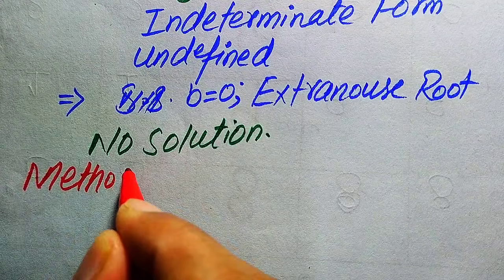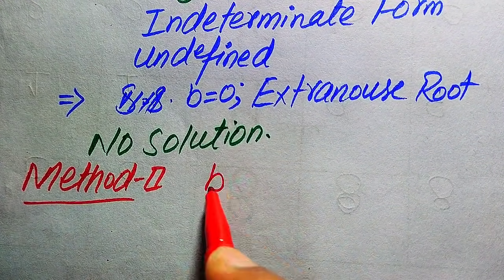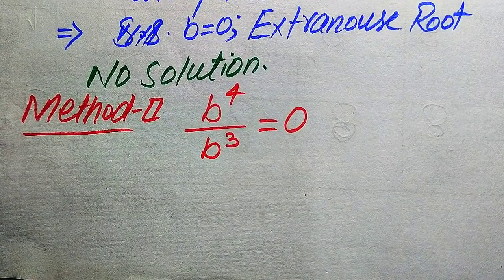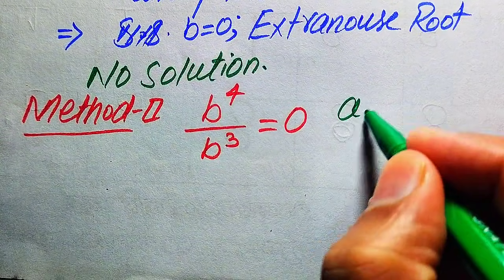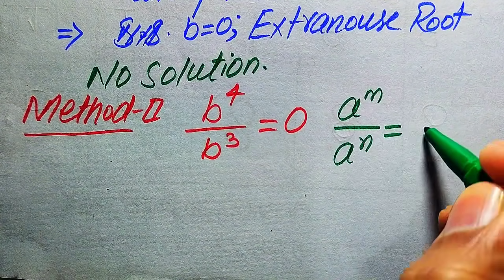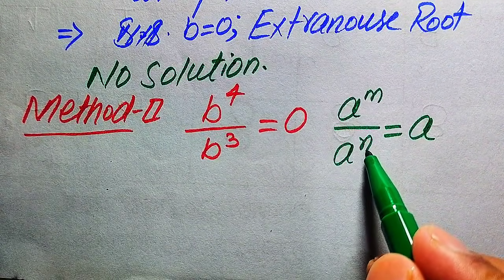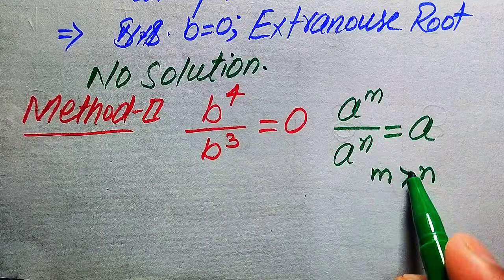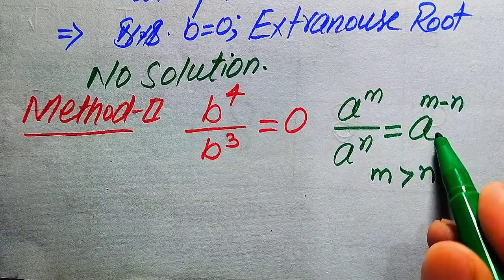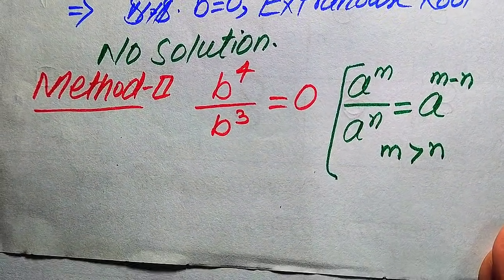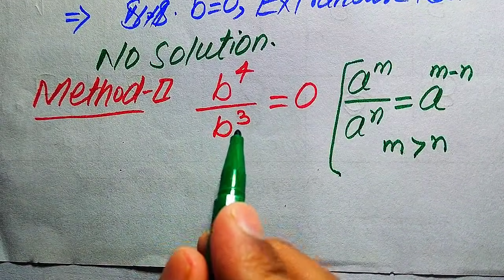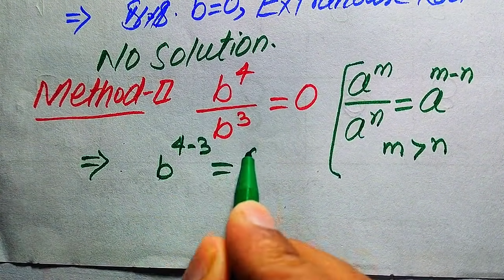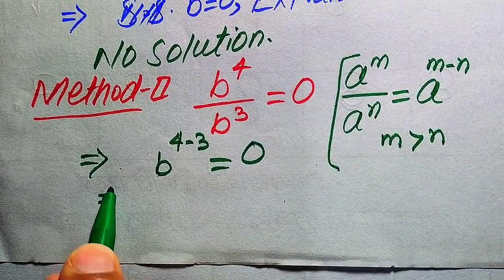In the second method, we again start with b to the power of 4 divided by b cubed equals 0. We use another exponential law: a to the power of m divided by a to the power of n equals a to the power of m minus n, when m is greater than n. Here, the exponent 3 is the smaller exponent, so we move it toward 4, giving us b to the power of 4 minus 3, which equals 0.